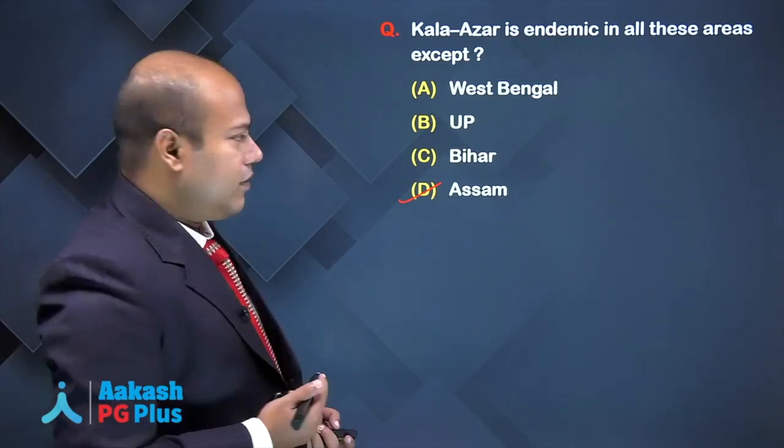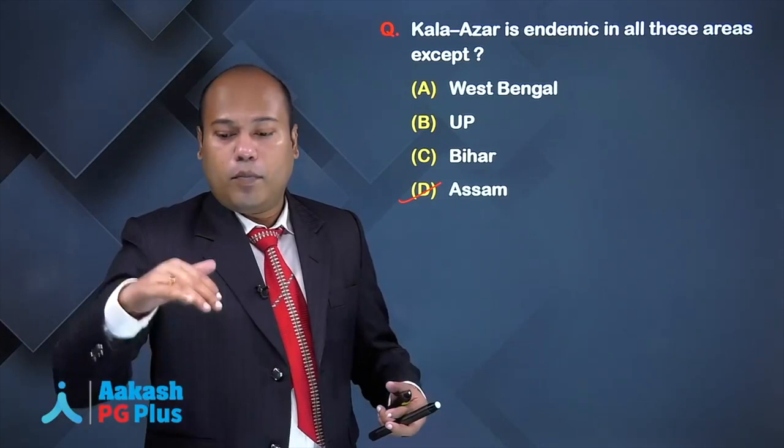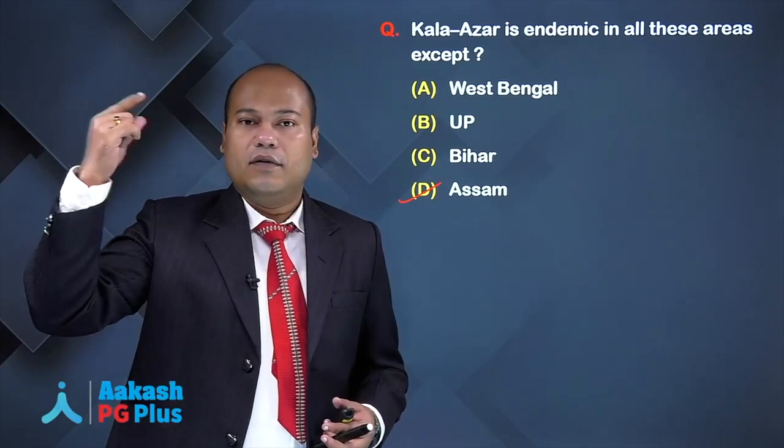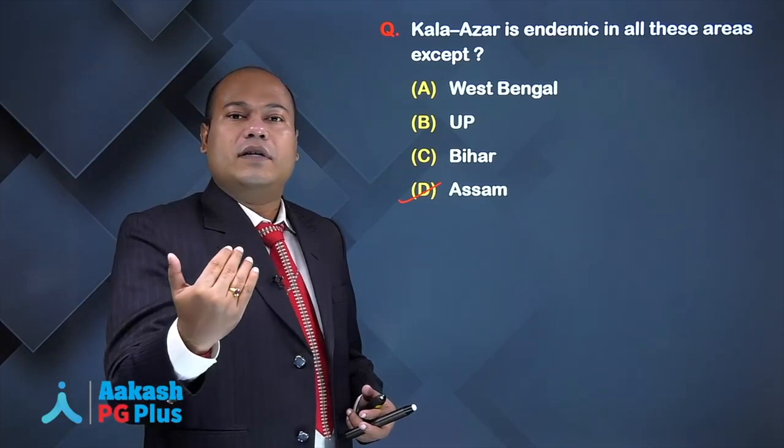Regarding the sandfly: it lives in crevices and cracks of walls. An interesting fact is that sandfly does not fly — it hops, up to a maximum height of 6 feet on walls. The insecticide of choice for sandfly is DDT. So when spraying DDT, you spray only up to 6 feet on the wall, not more.